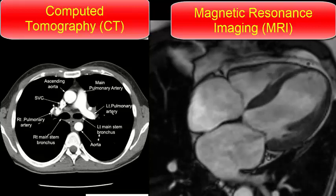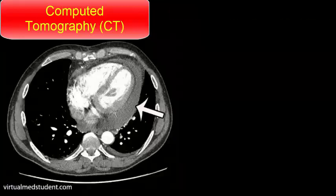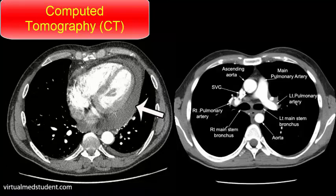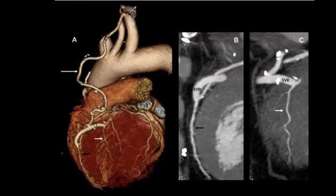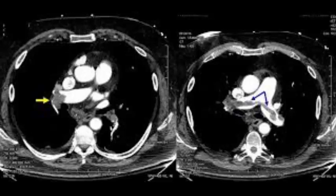CT imaging is useful for imaging the cardiac chambers, great vessels, pericardium, and mediastinal structures and masses. Multi-detector scanners can acquire up to 320 slices per rotation, allowing very high-resolution imaging. CT is often performed using a timed injection of X-ray contrast to produce clear images of blood vessels and associated pathologies.